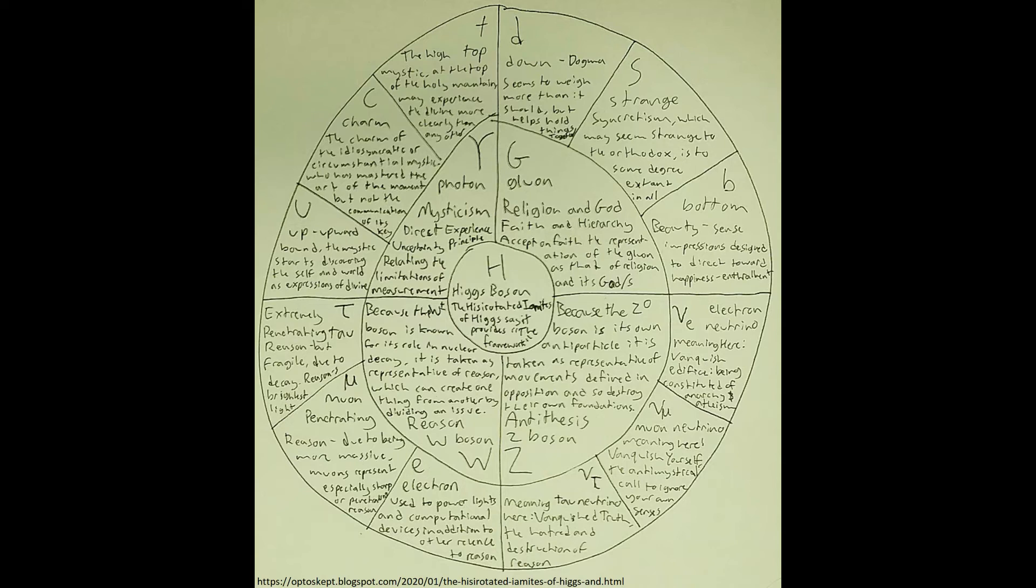Next is the Z boson, which in this system represents antithesis, which is all movements and ideas that are defined by their opposition to something else. They are associated with the Z boson because it is its own antiparticle, and they similarly destroy their own foundation if they destroy the opposition they are founded on. This is divided between the electron neutrino, the muon neutrino, and the tau neutrino.